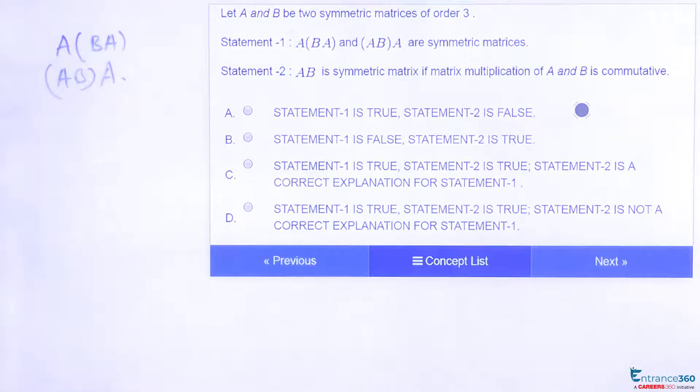Statement 2 is: AB is symmetric matrix if matrix multiplication of A and B is commutative. We need to find which of the four options is correct, either statement 1 is true or false.